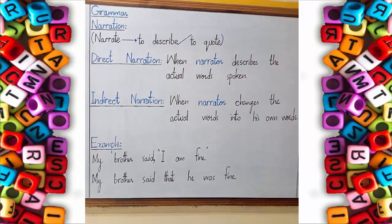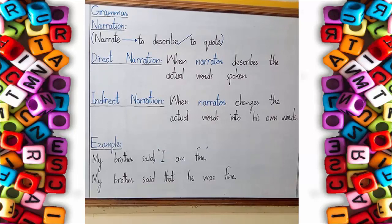What is narration? The word narration has come into existence from the word narrate. Narration is a noun and narrate is a verb. If you understand the word narrate, you can easily understand narration. Narrate means to describe, to quote. In simple words, narration means a statement quoted or described by somebody.